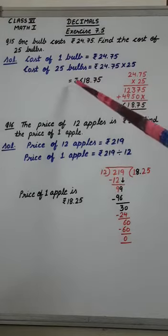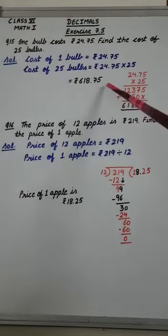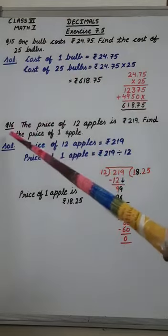So we have to count two digits from back and put decimal. So answer is rupees 618.75.